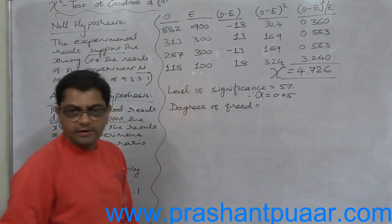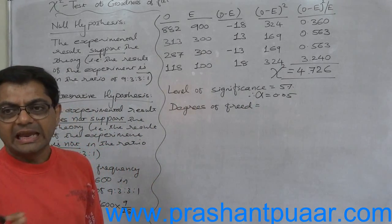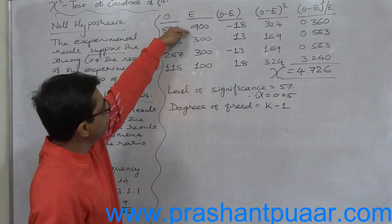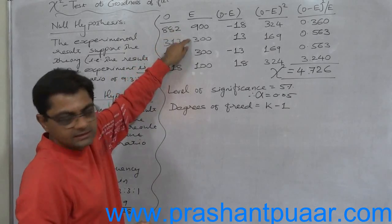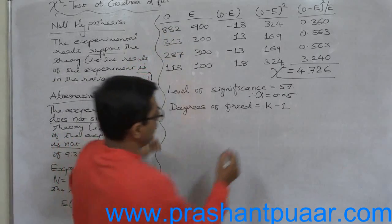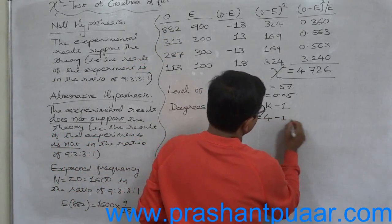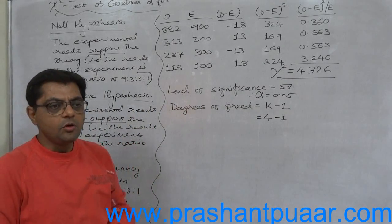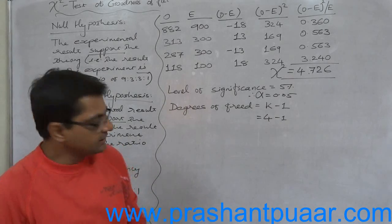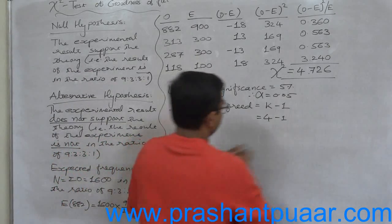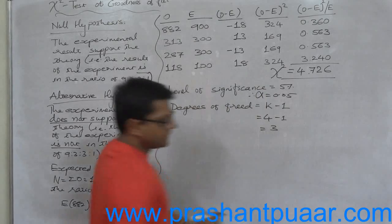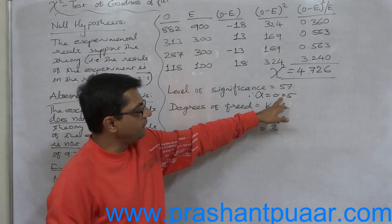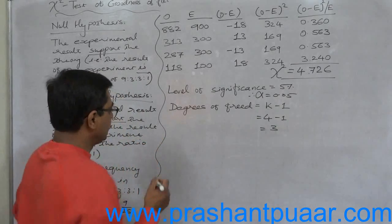Degrees of freedom: I will prefer to use letter K instead of N. K minus 1, where K means number of cells or number of cases: 1, 2, 3, and 4. So it is 4 minus 1. See, there is nothing like a contingency table, no data in the form of rows and columns, so we use this formula. Degrees of freedom equals 3, so row 3 and column alpha 0.05, critical value 7.815.